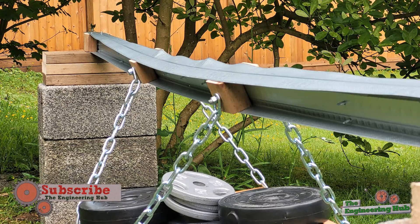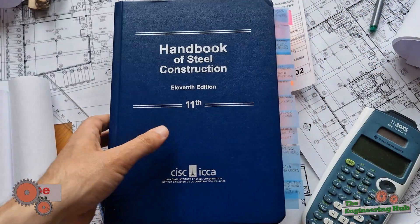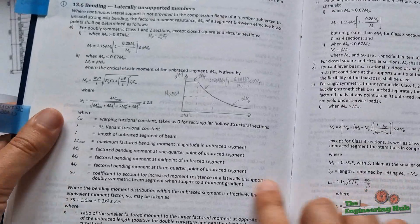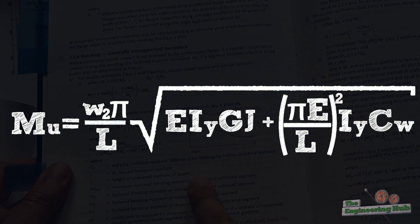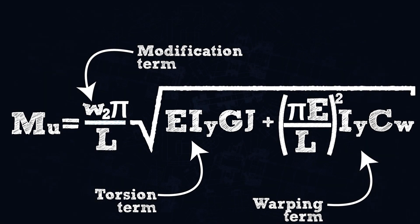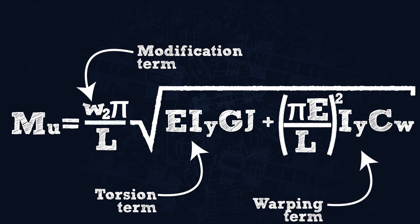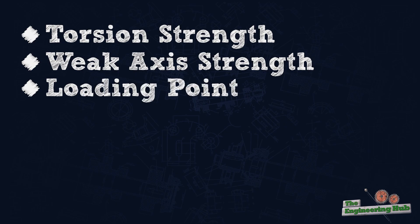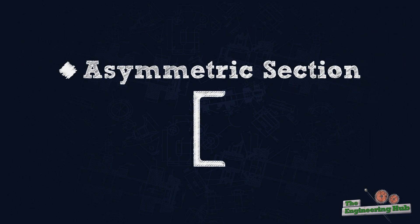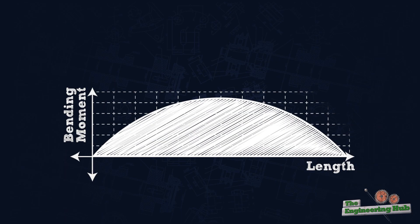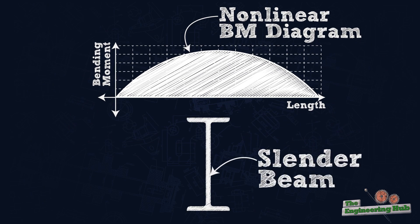Since lateral torsional buckling is load specific, design codes around the world have had trouble fully capturing its effects with one equation. Many codes rely on the equation derived for a beam subjected to end moments, which is comprised of two main terms — the torsional and warping stiffness of the beam. To extend its utility to multiple cases, design codes add a modification factor that accounts for different bending moment distributions, but this equation still has many limitations. Besides torsional capacity, bending resistance about the weak axis, and the point of load application, other factors also influence lateral torsional buckling, such as stress amplification in less symmetric sections, end conditions that do not fully restrain twisting, varying bending moment diagrams, the slenderness of the beam, and the load type.